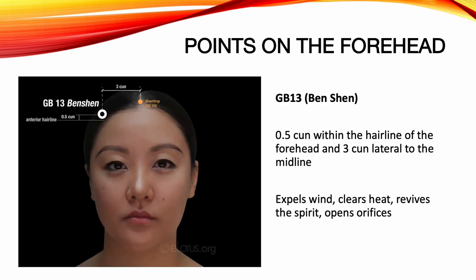Gallbladder 13, Bend Shen. Location: 0.5 Sun within the hairline of the forehead, and 3 Sun lateral to the midline. Functions: expels wind, clears heat, revives the spirit, opens orifices. Indications: headache, vertigo, blurred vision, seizures, stroke, paralysis, convulsions in children, hypochondriac area pain.